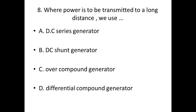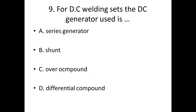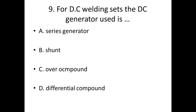Ninth bit: For DC welding sets, the DC generator used is dash. Option A: Series Generator. Option B: Shunt. Option C: Power Compound. Option D: Differential Compound. Answer — Option B: Shunt.